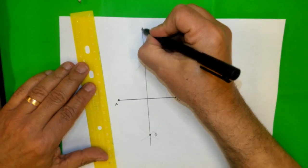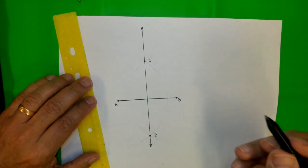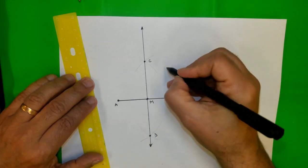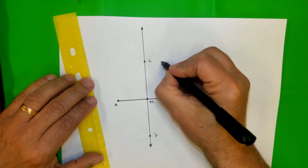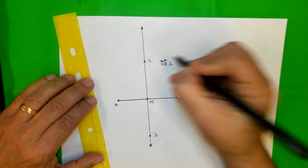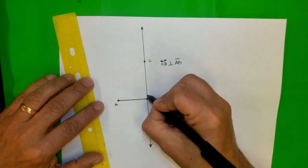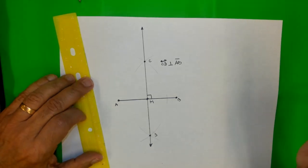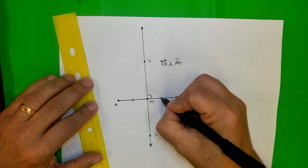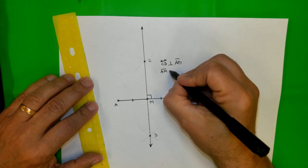Which means CD, the line CD, is perpendicular on the segment AB. It forms a right angle here. You can measure with a protractor if you want. And also it means that AM and MB, these two segments, are congruent.